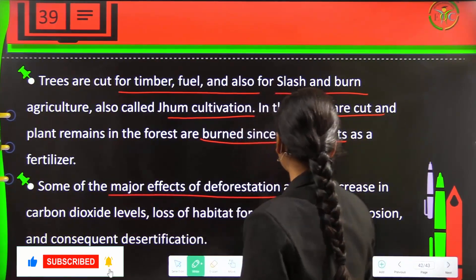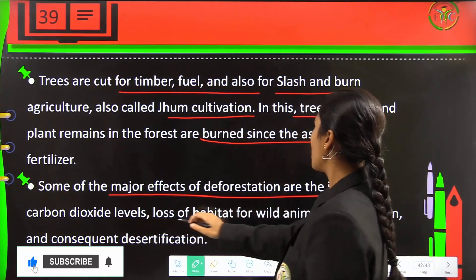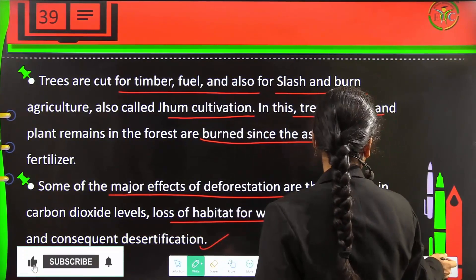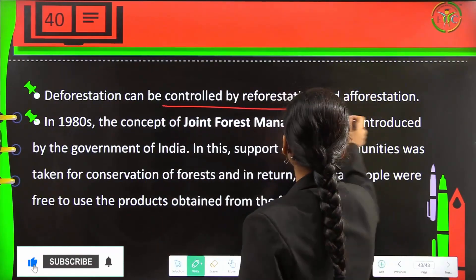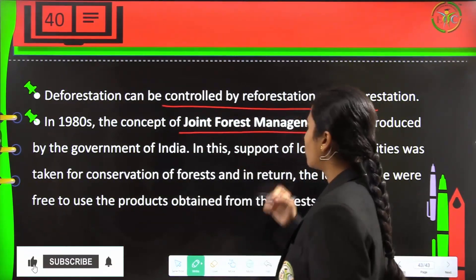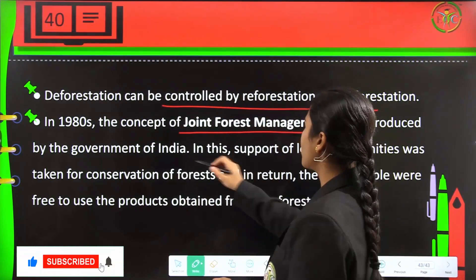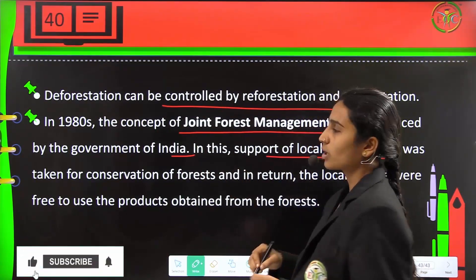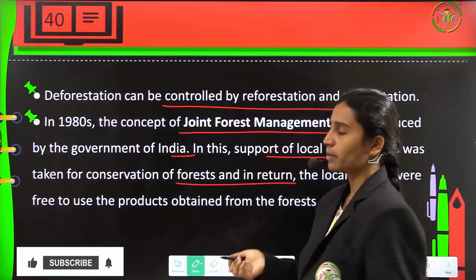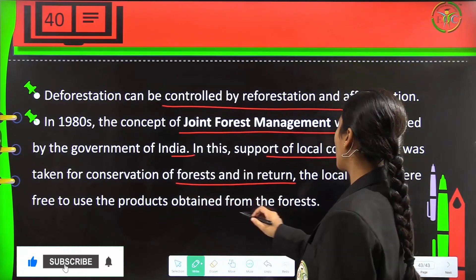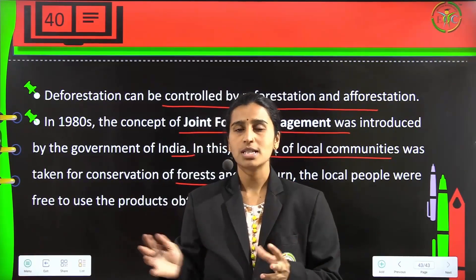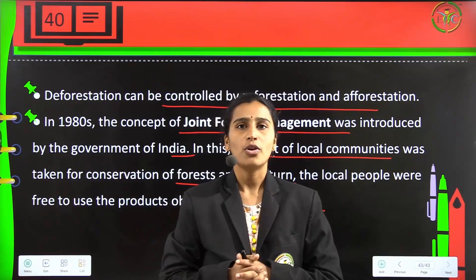Some major effects of deforestation are the increase in carbon dioxide levels, loss of habitat for wild animals, soil erosion and consequent desertification. Deforestation can be controlled by reforestation or afforestation. In the 1980s, the concept of Joint Forest Management was introduced by the Government of India, supporting local communities for conservation of forest. In return, local people were free to use the products obtained from the forest and were supposed to protect the forest.